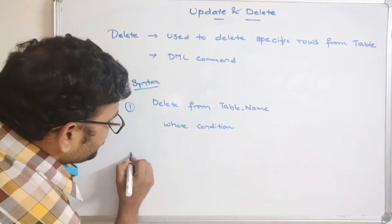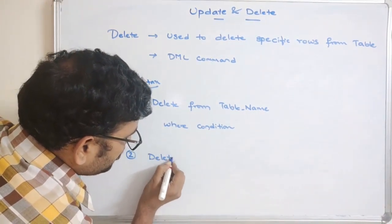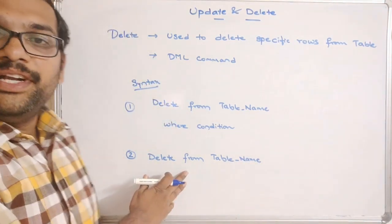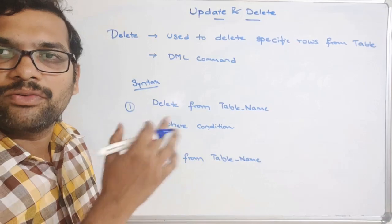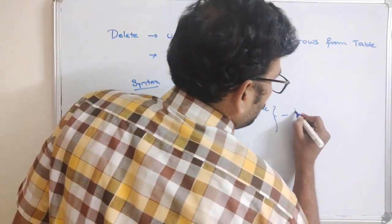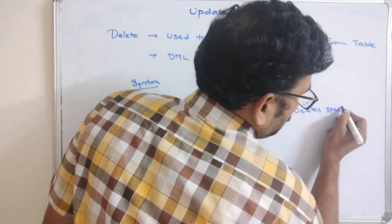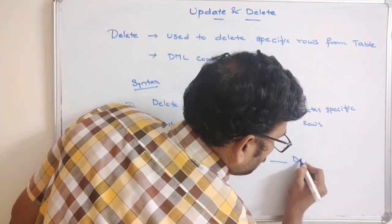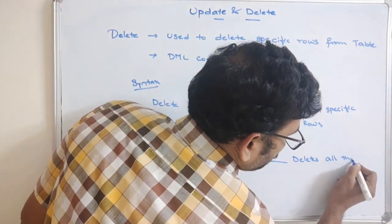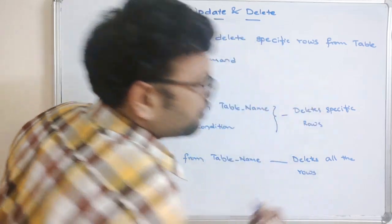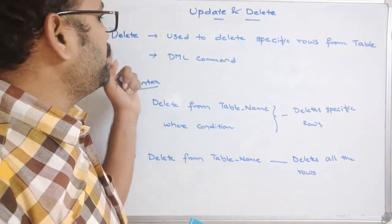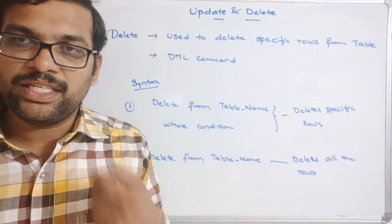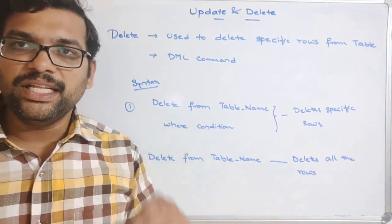There is a second syntax: DELETE FROM table_name — with no WHERE clause. This will delete all the rows from the table, similar to TRUNCATE. So the first syntax deletes specific rows or records, and the second deletes all records from the table. DELETE is a DML command, and UPDATE is also a DML command — UPDATE reassigns values, DELETE removes required rows.